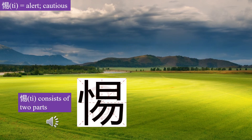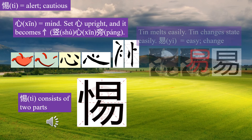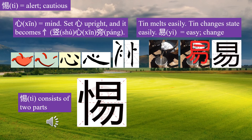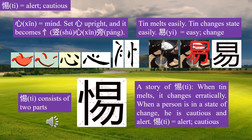The character 惕 (Ti) consists of two parts: 心 (heart/mind) — set it upright and it becomes the heart radical. Tin melts easily; Yi means easy, change. A story of Ti: when tin melts, it changes erratically. When a person is in a state of change, he is cautious and alert. Ti means alert, cautious.